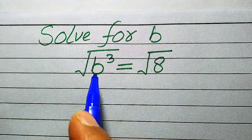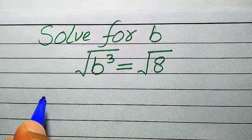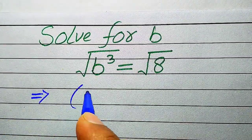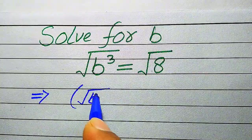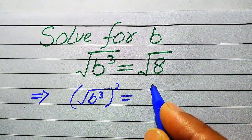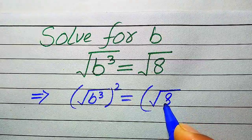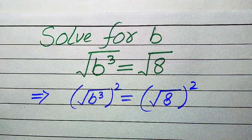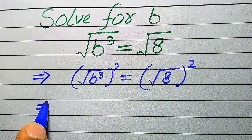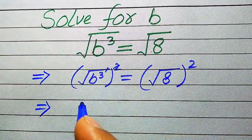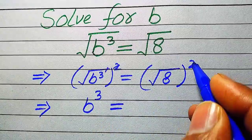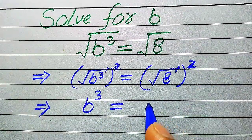The very first thing we are going to do is remove the square root sign from both sides. In order to remove the square root sign, we need to take squaring on both sides. When we apply squaring, the square root of b cubed whole squared becomes b cubed, and the square root of 8 whole squared — these two and the square root are cancelled out by each other.